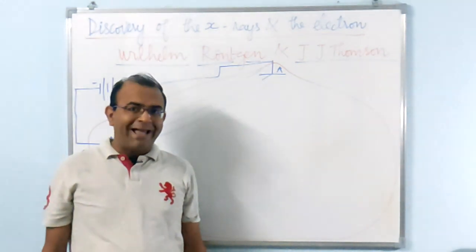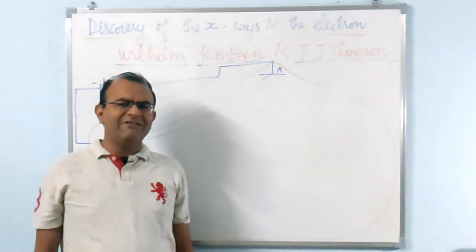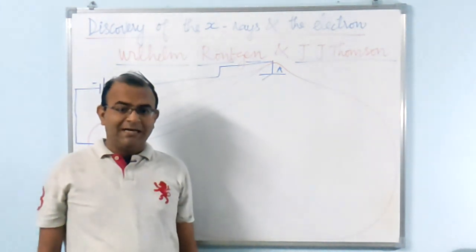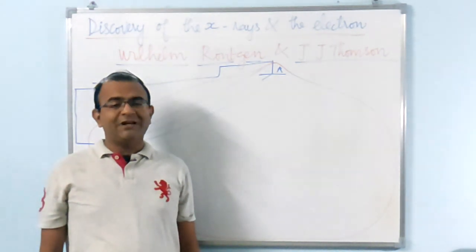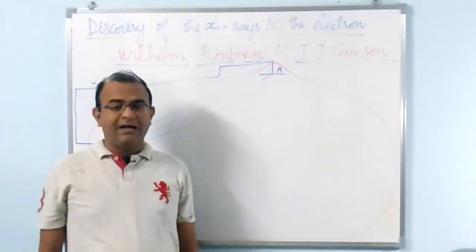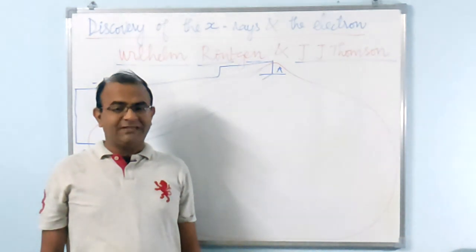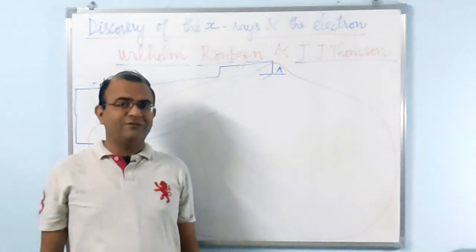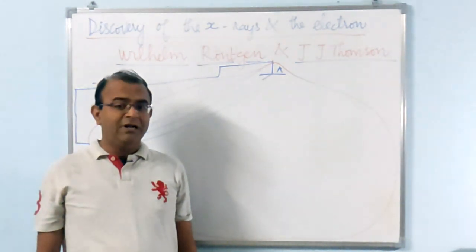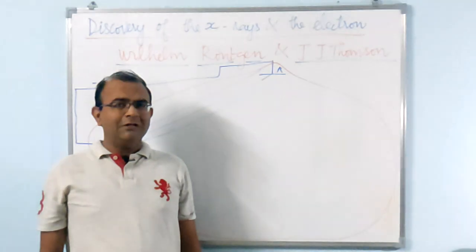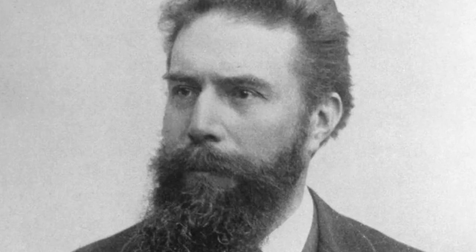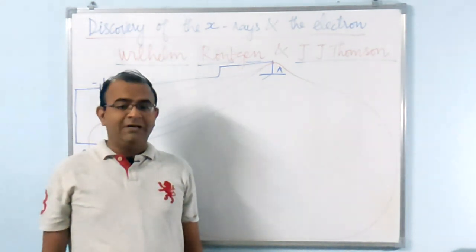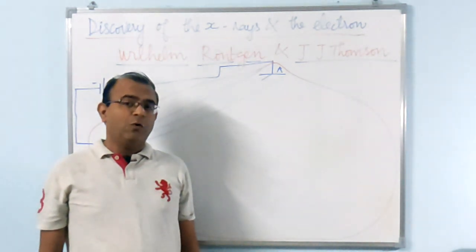Wilhelm Röntgen was born in Germany in 1845 but was brought up in the Netherlands. He attended the University of Zurich, where he graduated with a degree in mechanical engineering. After several university appointments, he was appointed chair of physics at the University of Munich, where he spent the rest of his life. Röntgen preferred working alone and built all his equipment himself. He refused to benefit from any of his discoveries and died nearly bankrupt in 1923 after the First World War.